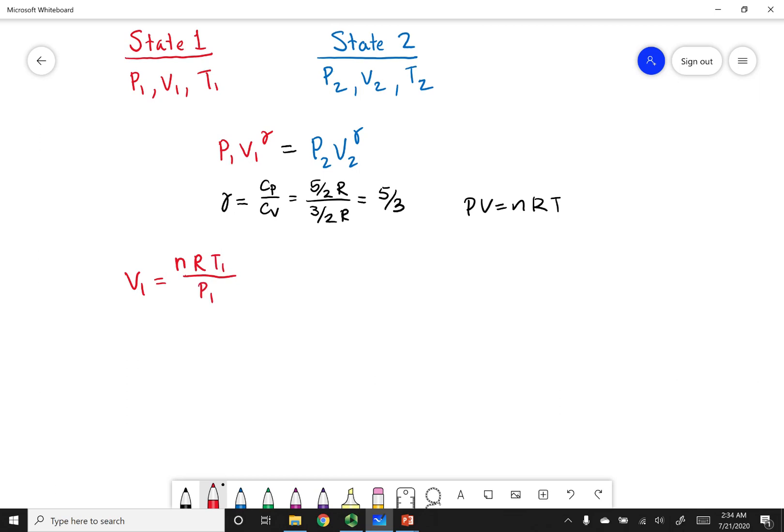So I can go ahead and put the values that were given in my problem. Well, I have 5 moles of gas. The R that I want to use is 0.08206 liter ATMs over Kelvin mole. Now I want to put the temperature. I was given 25 degrees Celsius. So let's put that into Kelvin, which is 298 Kelvin. And I want to divide this by the initial pressure. And in this case, my initial pressure was 10 ATMs. Now with all this data, I can go ahead and calculate V1. And V1 happens to be 12.23 liters.